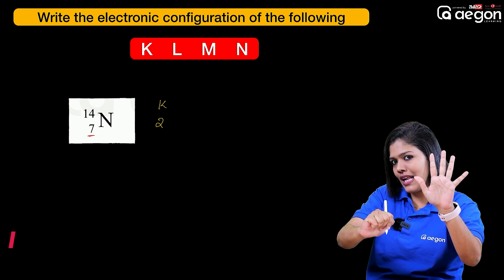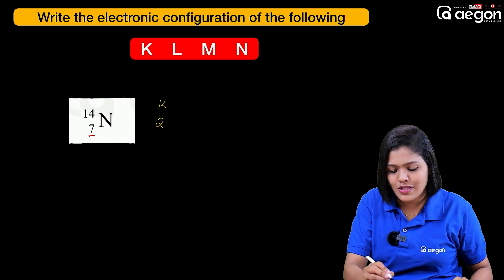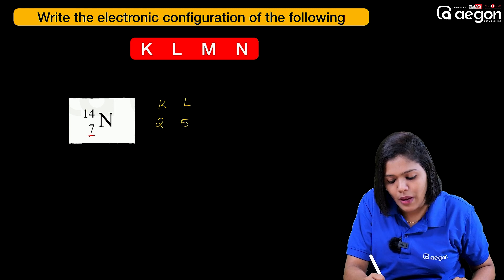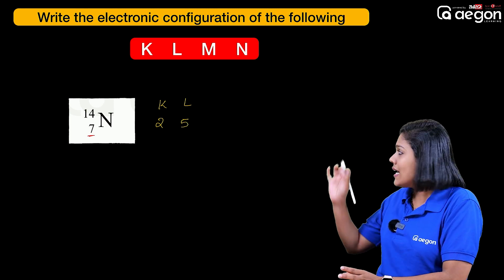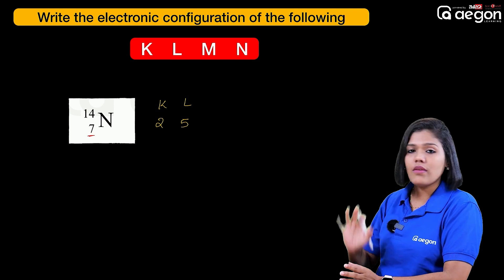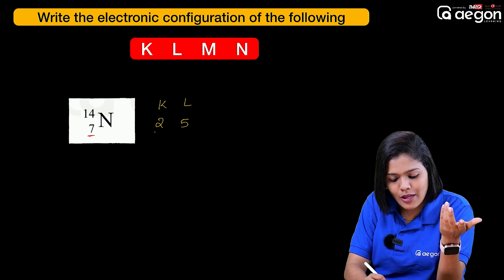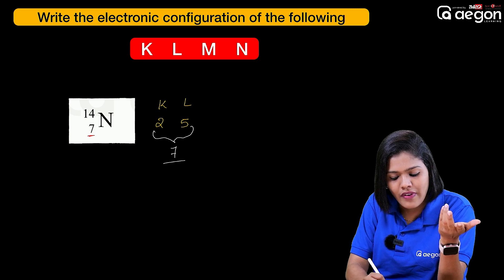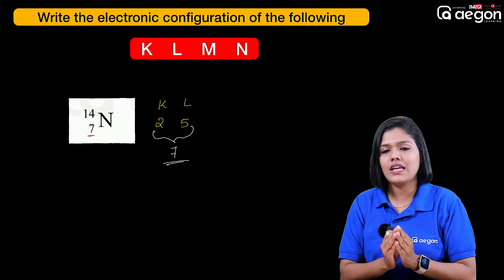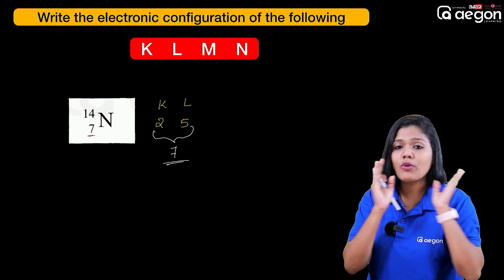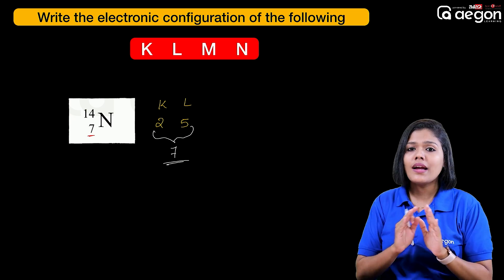We are at atomic number 8. K shell has 2 electrons. There are 2 electrons in the K shell. At atomic number 7, it cannot accommodate more electrons. These are the other electrons. We will give you the 2nd step. This is your configuration: 2, 5. 2 plus 5 equals 7.